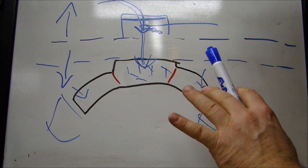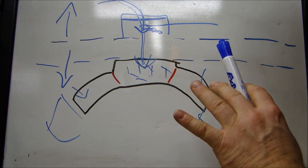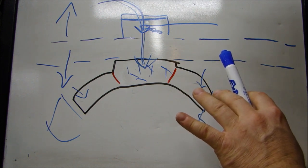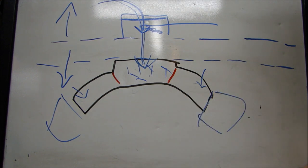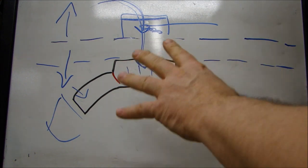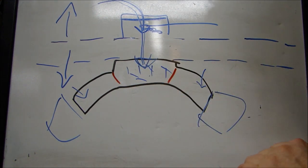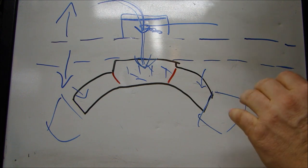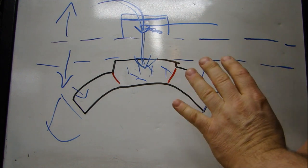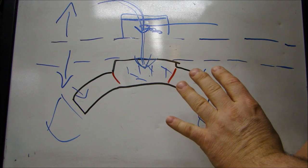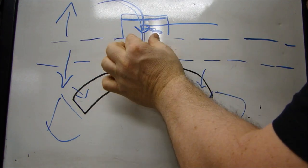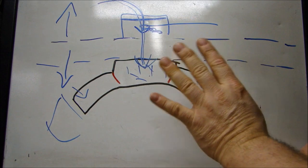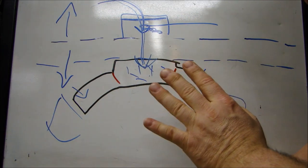I mentioned OEM manifolds before — how they're designed for throttle response. OEMs, when you're rebuilding your engine and reusing that manifold, most OEMs usually go for an oversized plenum with a smaller throttle body so they can boost their throttle response.